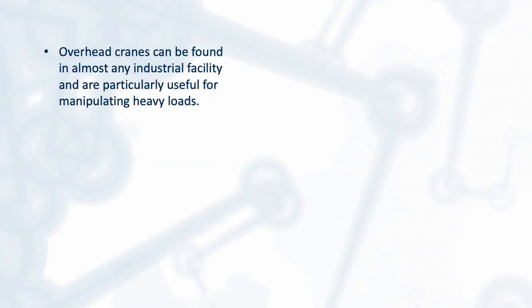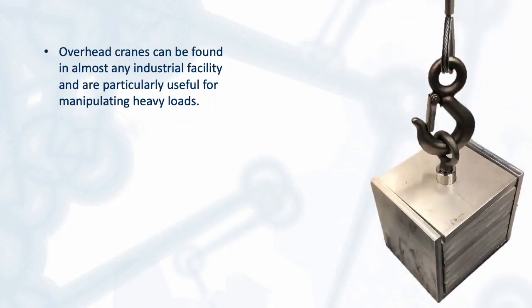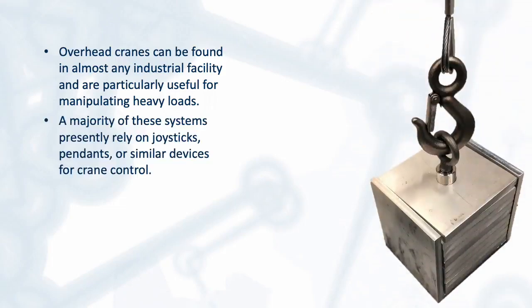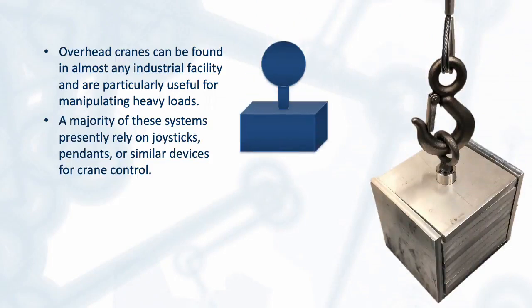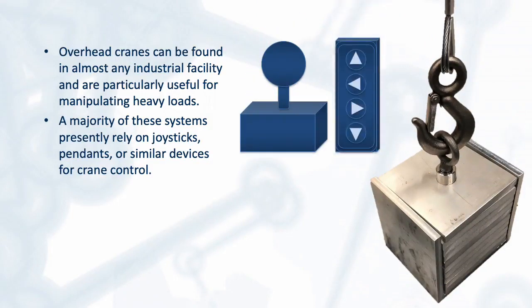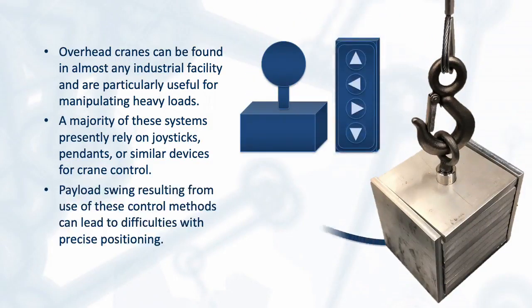Overhead cranes can be found in almost any industrial facility and are particularly useful for manipulating heavy loads. A majority of these systems presently rely on joysticks, pendants, or similar devices for crane control. Payload swing resulting from use of these control methods can lead to difficulties with precise positioning.